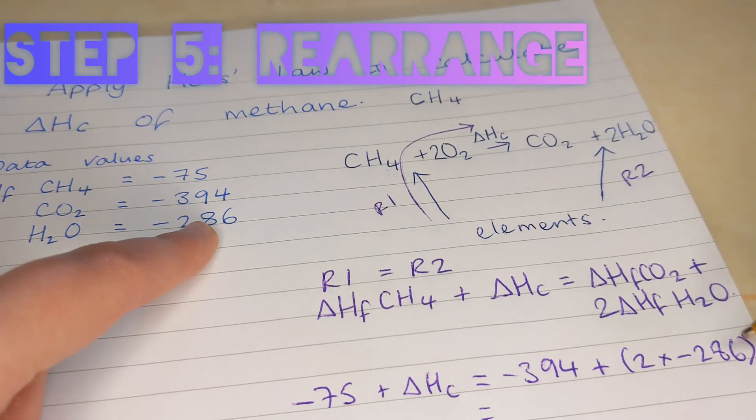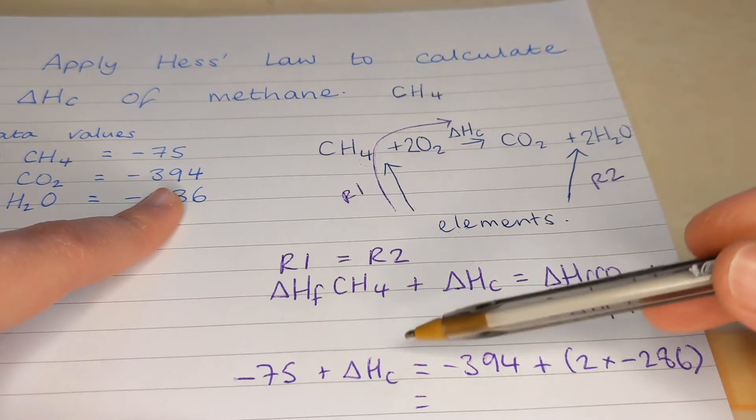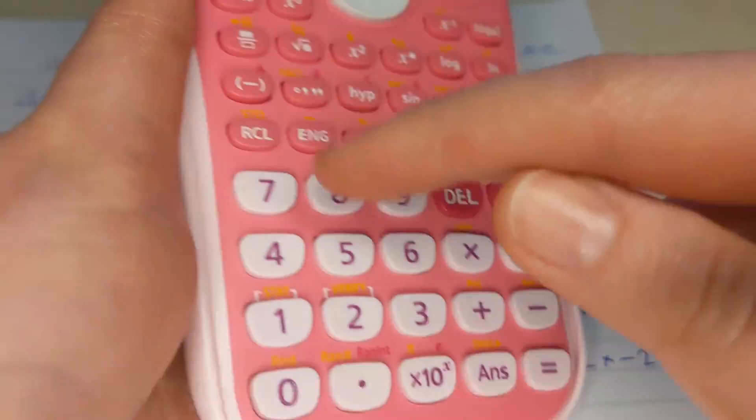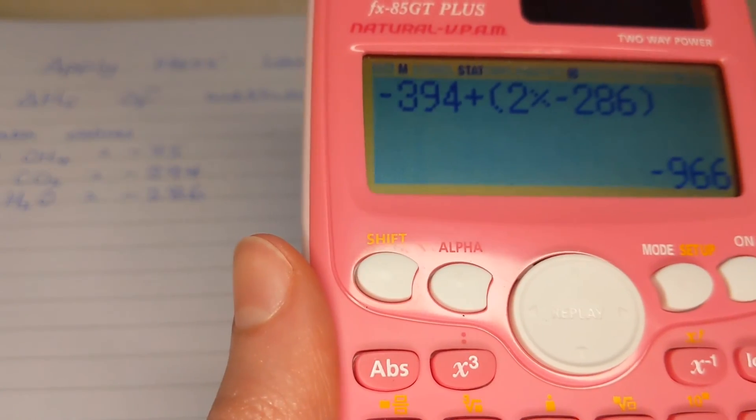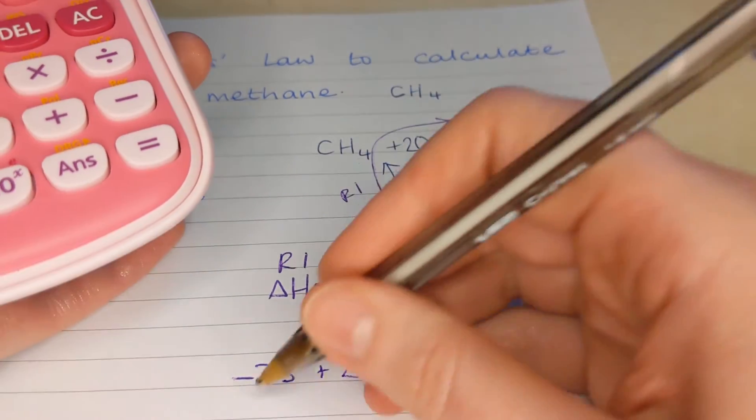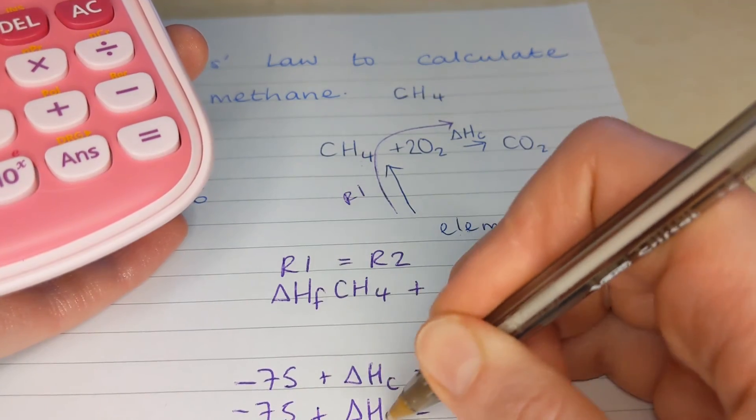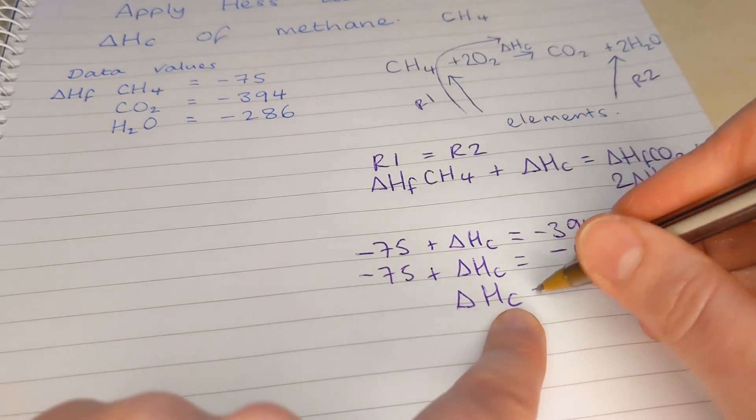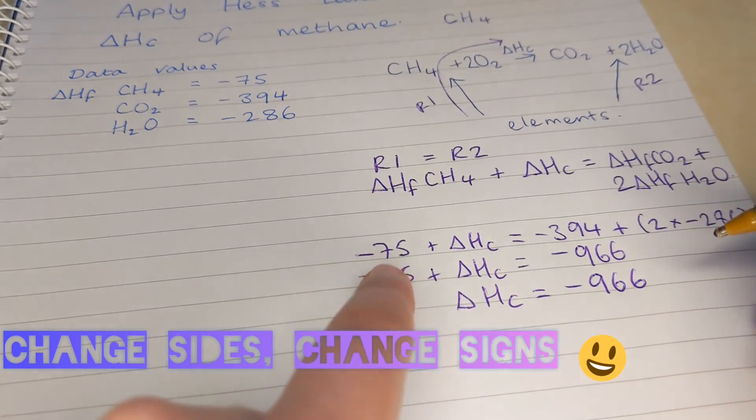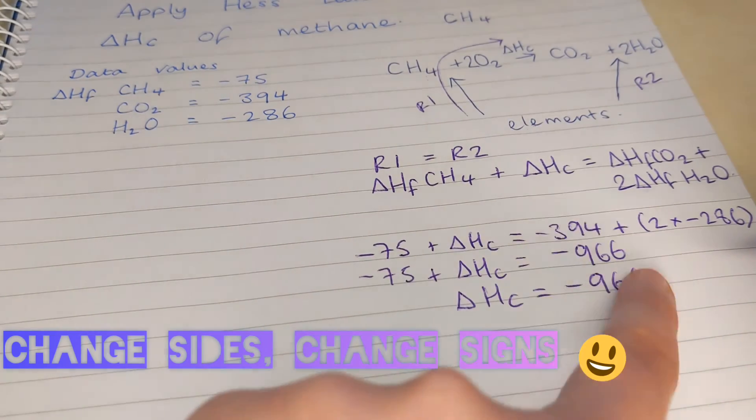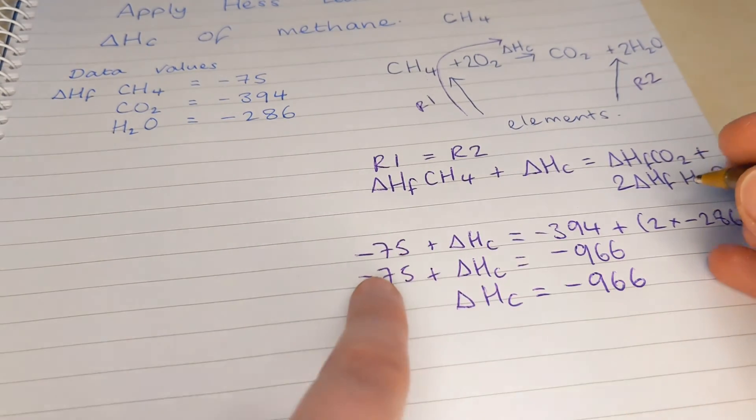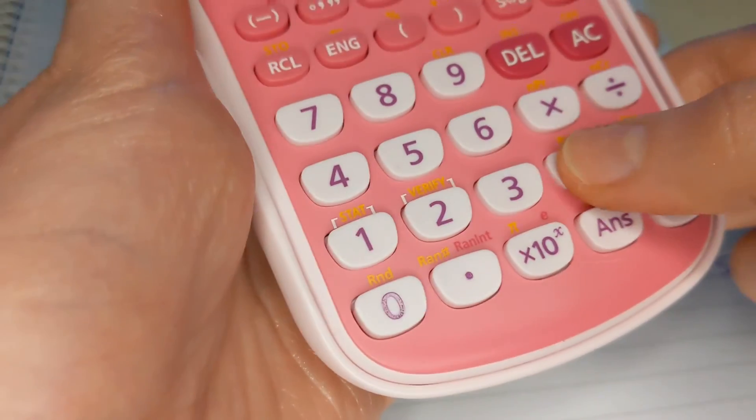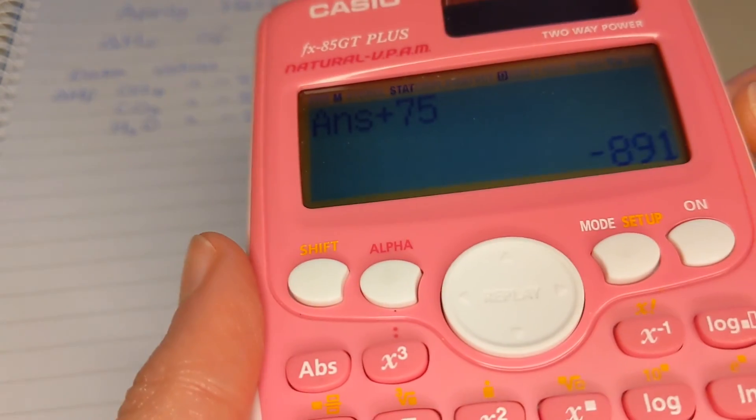So I'm going to work this out. And then my next step, after I've worked out this side, is to rearrange in terms of delta HC. I've got minus 966. Now let's rearrange. So we want delta HC by itself on this side. This stays over here. And we want to move this across the equals. When we move sides, we change signs. So change sides, change signs. So that negative becomes a positive. Plus 75. Let's work that out. Minus 891. Sounds good to me.